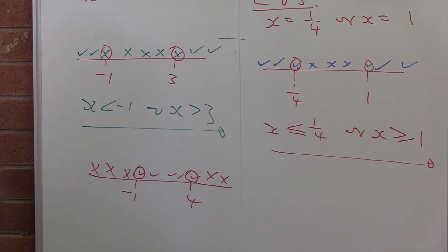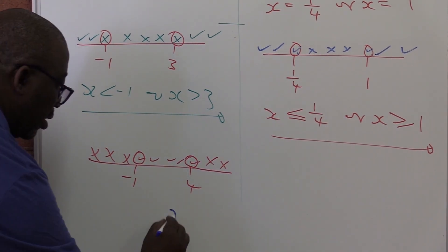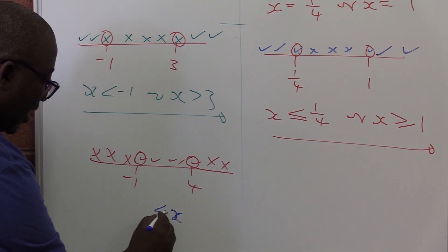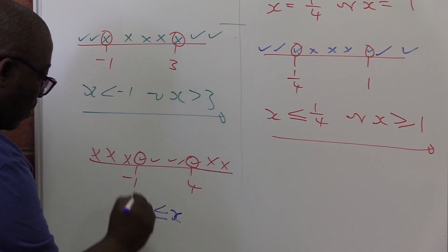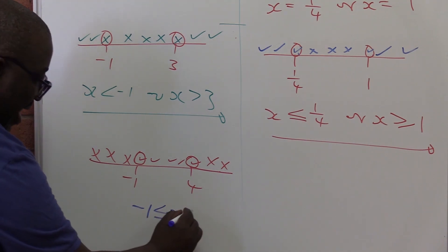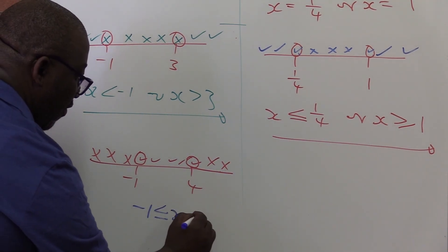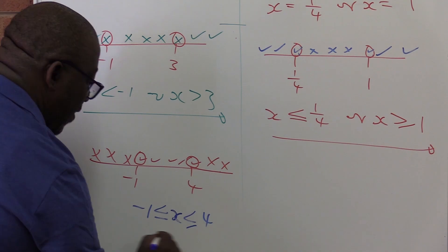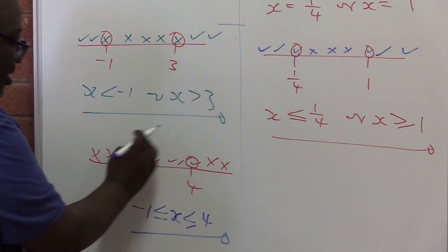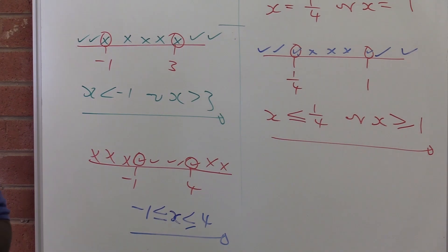Let's write this solution. Our solution is greater than or equal to minus one and less than or equal to four. That's how you represent it when the solution is found in the middle region. This part is called the inequalities.